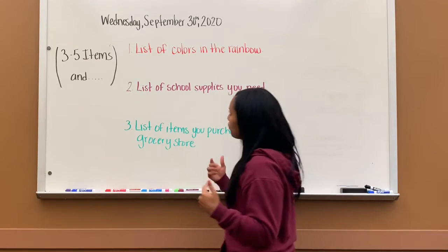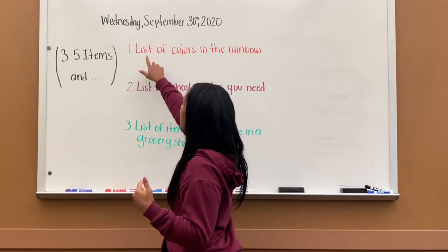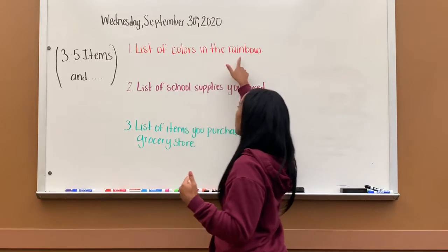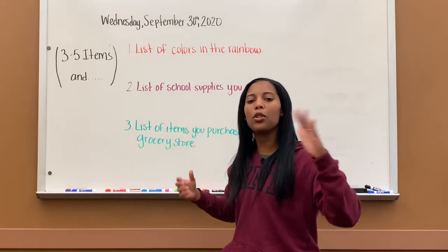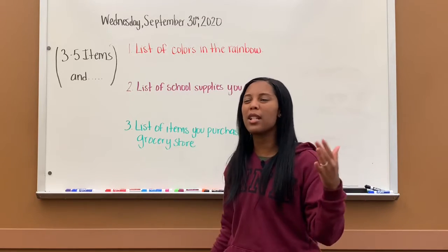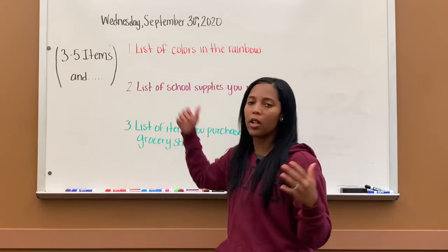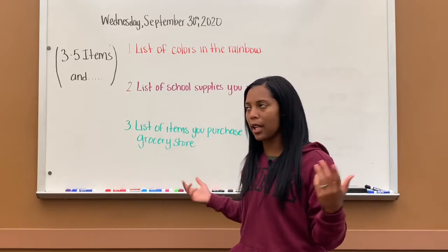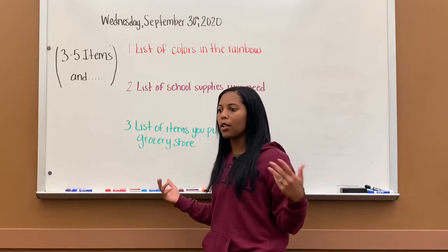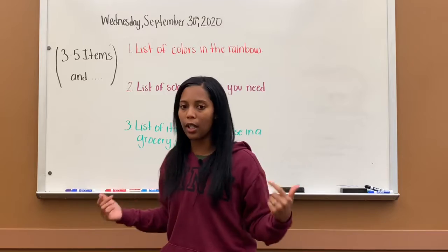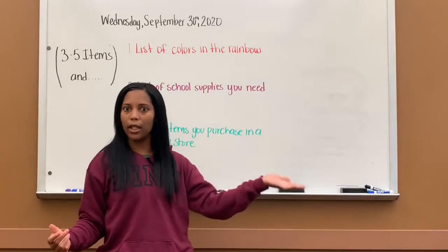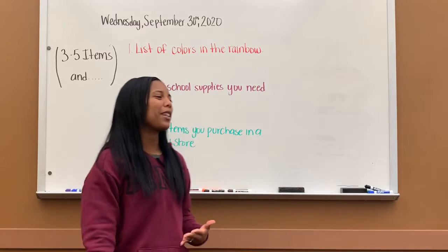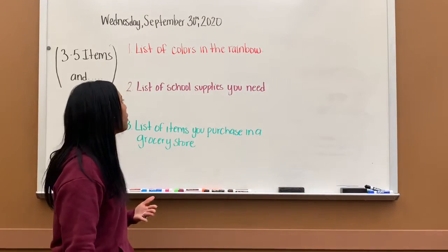Number one, you will create a sentence listing the colors in the rainbow. I know there are a few — you don't have to list them all. Do four of the colors that are in a rainbow. You would say something like, 'In a rainbow, the colors are...' and then say what they are, making sure you're putting the commas between them.